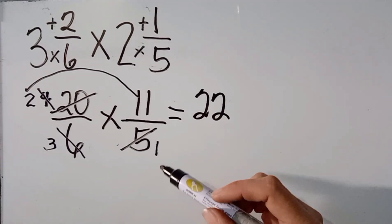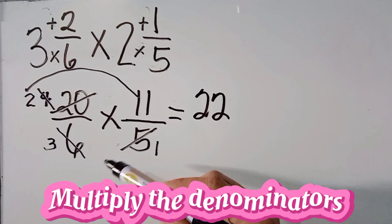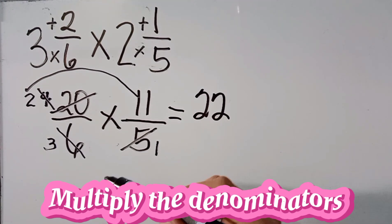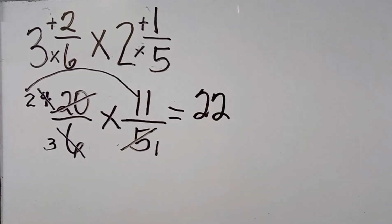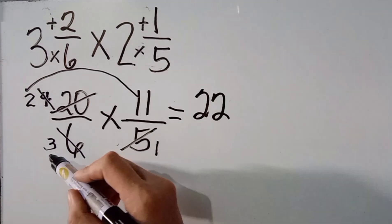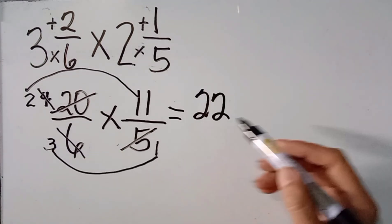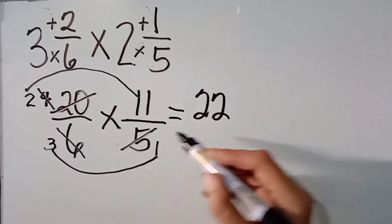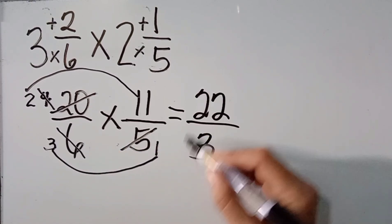Next is we are going to multiply the denominators. So, na saan po dyan ang ating denominators? Ito pong 3 at saka yung 1. So, 3 times 1, the answer is 3.